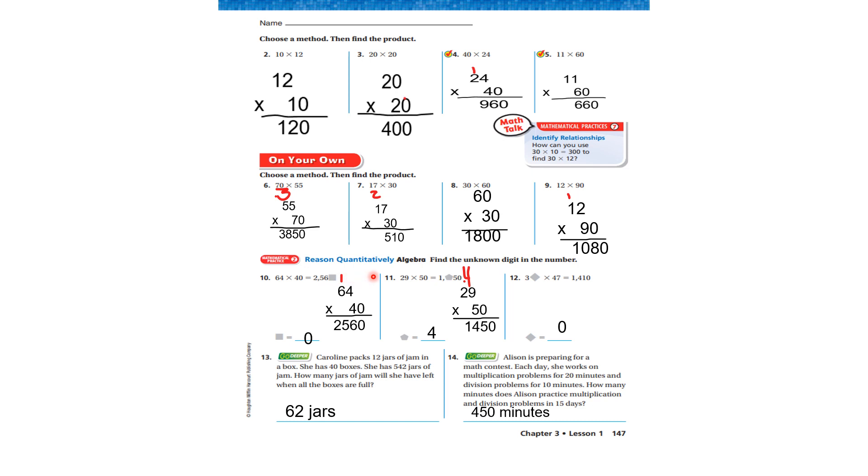Reason quantitatively. These weren't hard. All you needed to do is work out sixty four times forty the way that I did and you found out that the answer was zero. And again, all you needed to do was work out twenty nine times fifty and the answer was four. A lot of you probably looked at this and said that has to be thirty is zero because we're working with multiples of ten. So zero.